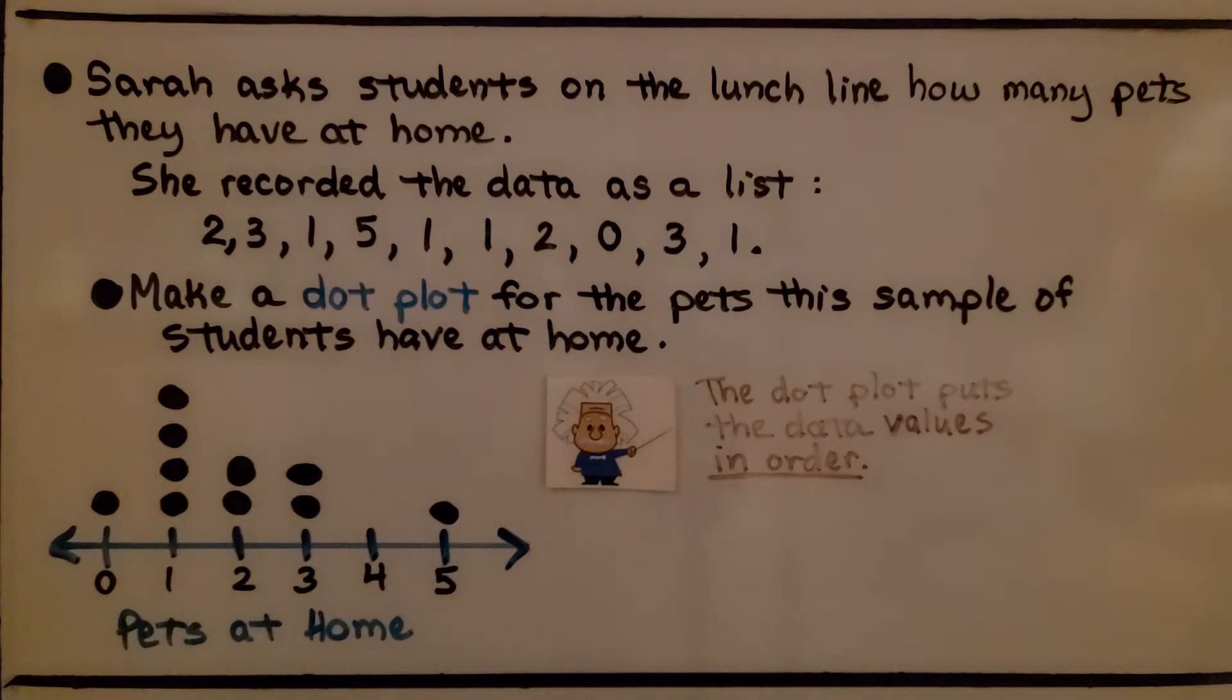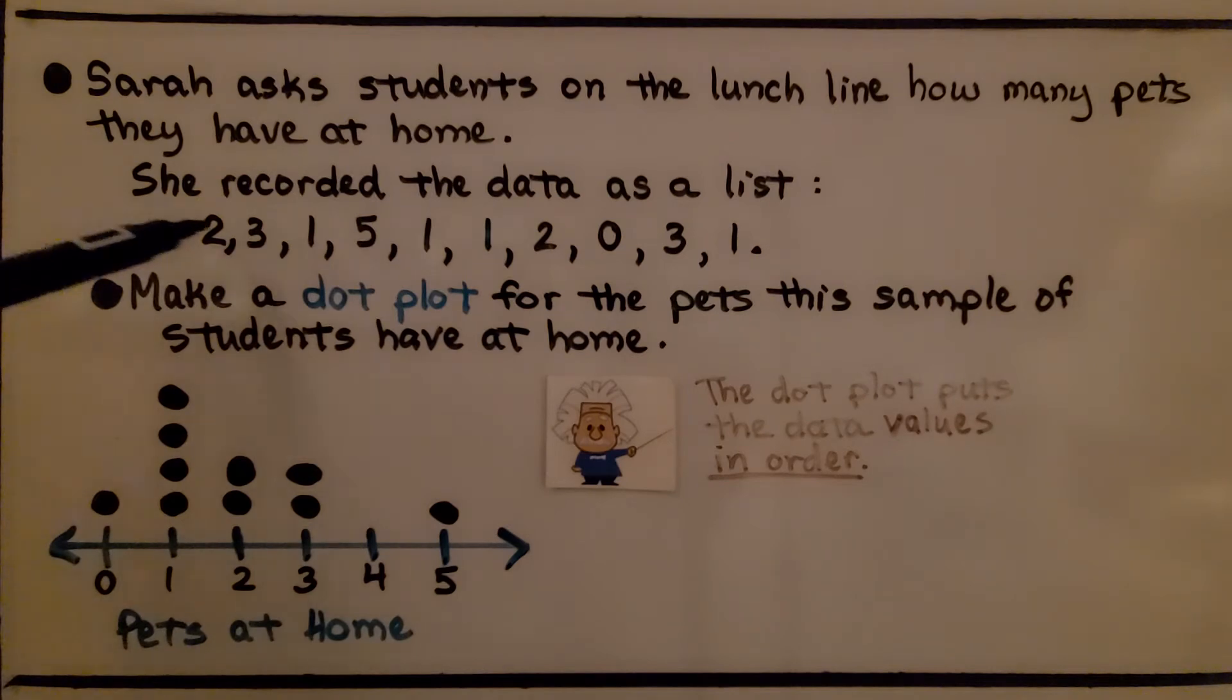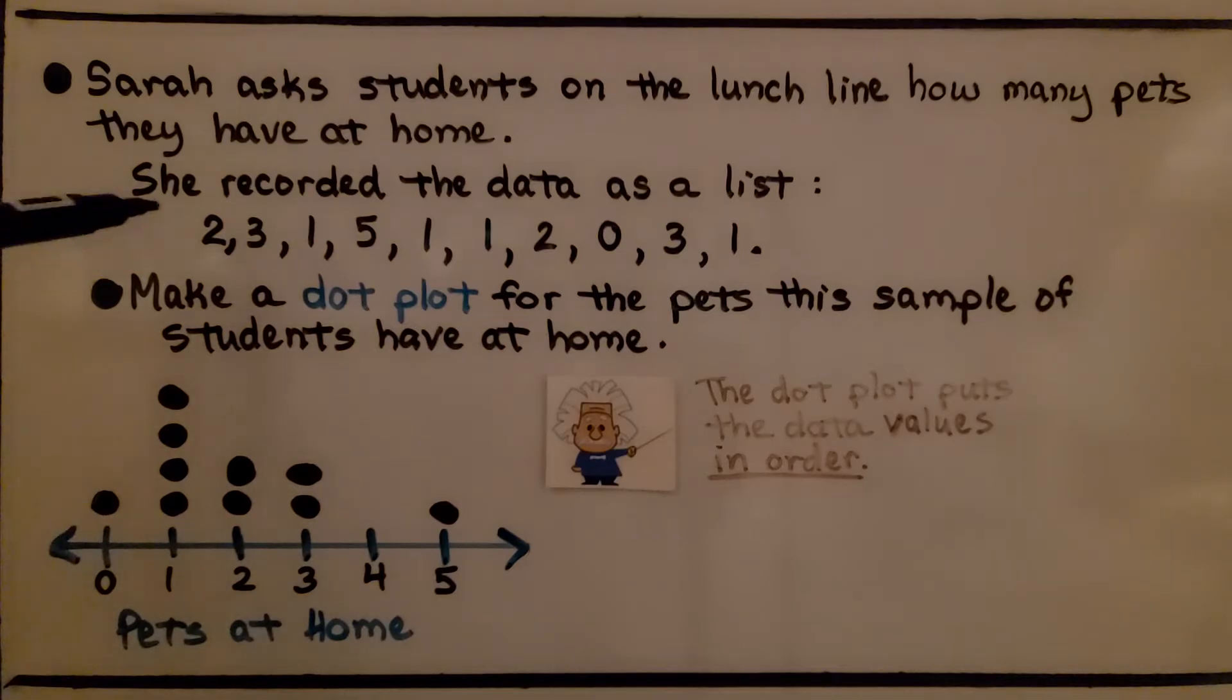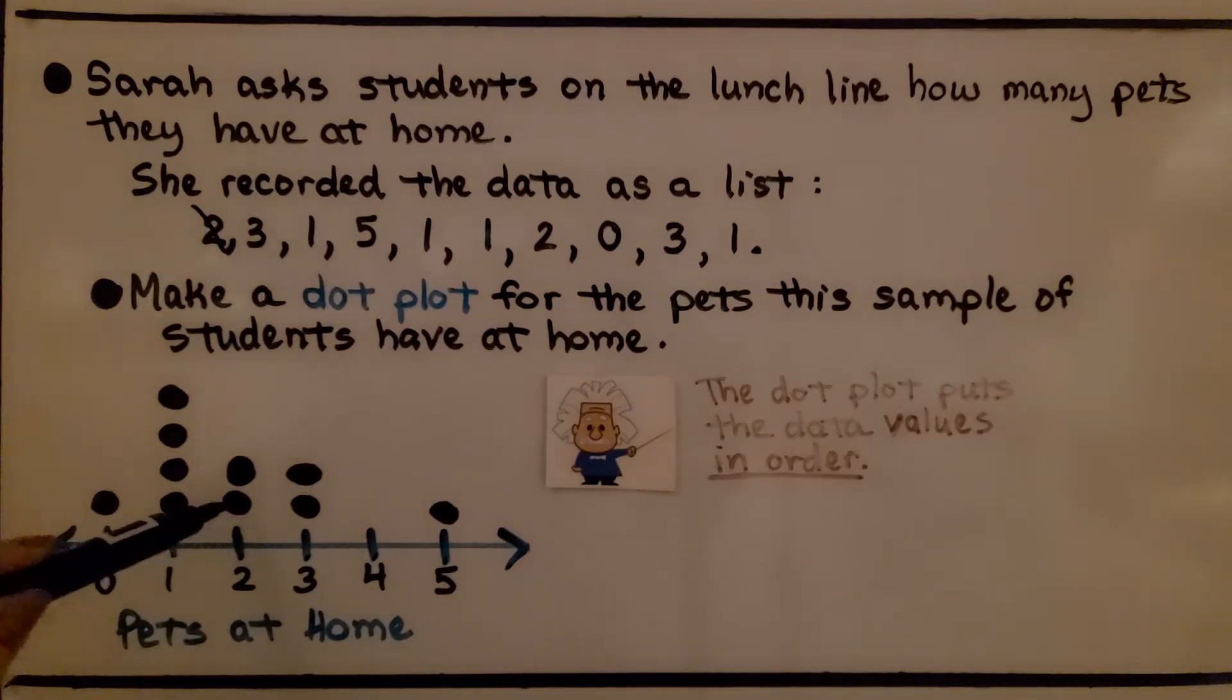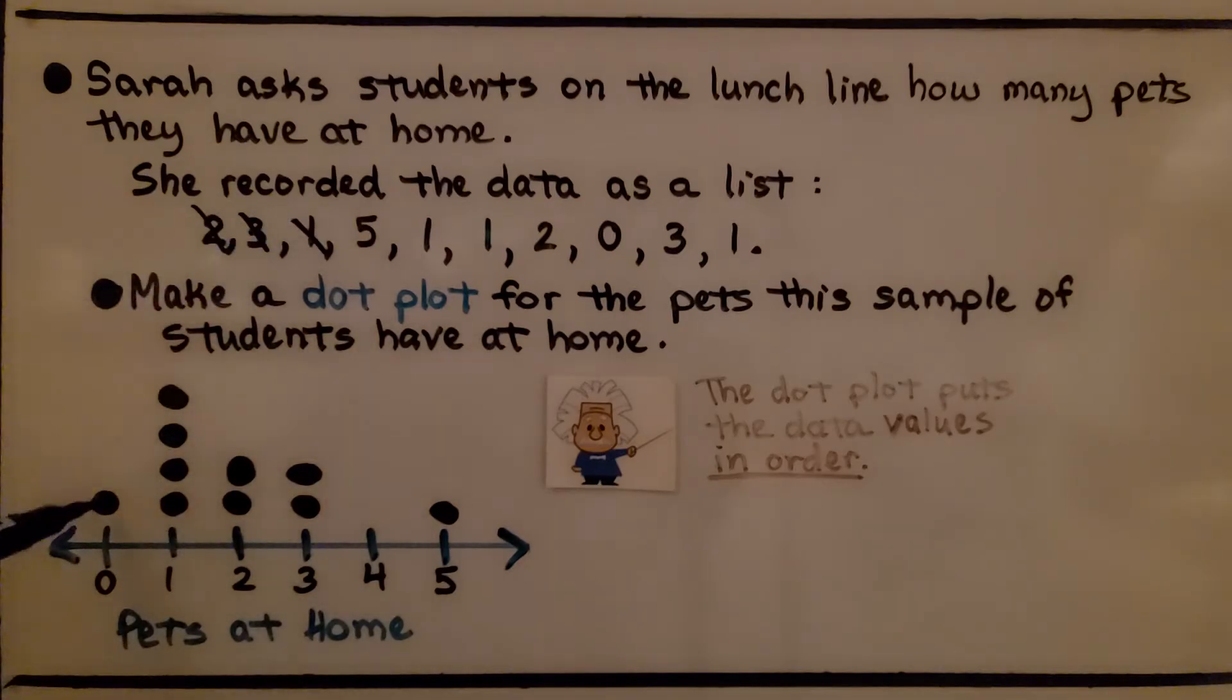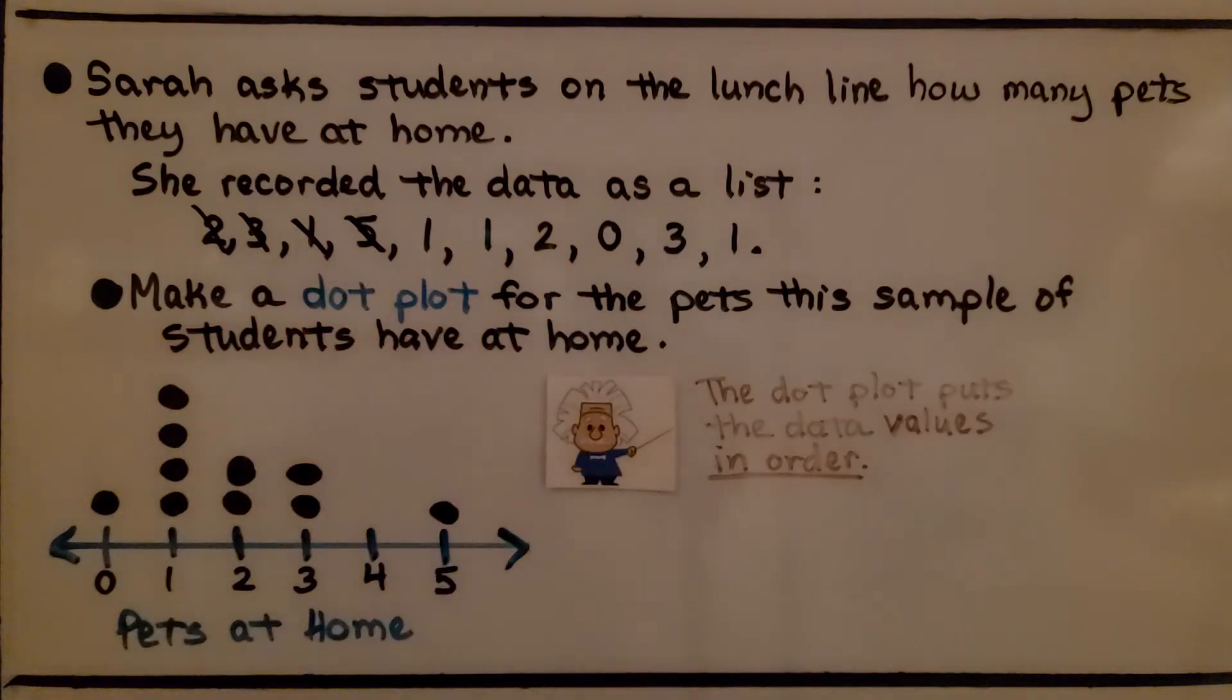We make a dot plot for the pets this sample of students have at home. We can put them in order, or we could just put them in the list onto our dot plot by crossing them out as we mark them. So we have a 2, we cross off the 2 and put a dot for the 2. We have a 3, we put a dot for the 3. We have a 1, we put a dot for the 1. We have a 5, and so on. And the dot plot puts the data values in order. We've got from zero to five.